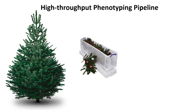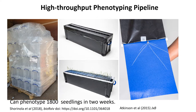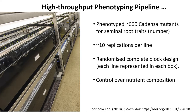So we decided to focus on seminal roots. To phenotype quite a number of plants, we found an unlikely inspiration from the Christmas tree storage box. The boxes were long enough to contain quite a lot of plants, so we went out in June to buy Christmas tree storage boxes, modified them with a little bit of low-cost engineering into root phenotyping units where plants were grown in pouches and filed like in a cabinet. With this protocol, we were able to phenotype about 1,800 seedlings in about two weeks. We recently published this work in BioRxiv — there's a link so you can find out more.